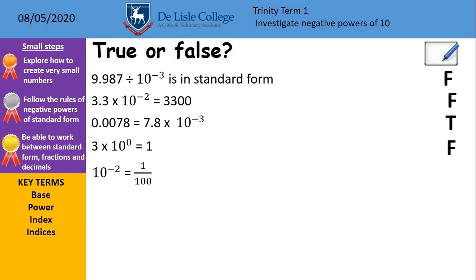And the last one, 10 to the power of minus 2 is the same as 1 divided by 100 or a fraction, 1 over 100. That one is true. So it's the same as writing 1 over 10 squared. 10 squared is 100, 1 over 100. Great stuff if you got those right. I'd be very, very happy if anyone got all five of those for me. Hopefully we got the bulk of those right.